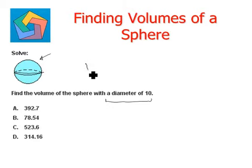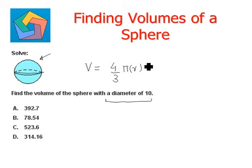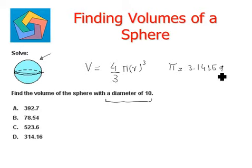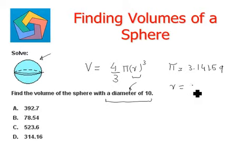Volume of a sphere is given by the formula 4/3 π r³, where π has a standard fixed value of 3.14159. Now here we need radius raised to the power of 3, but in the question we are given the diameter.